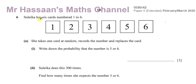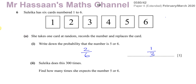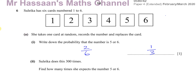It says Suleika has six cards numbered one to six. She takes one card at random, records the number, and replaces the card. Write down the probability that the number is a five or six. There are two cards that fit that description out of six, so the probability of getting a five or a six is two out of six, which simplifies to one third.